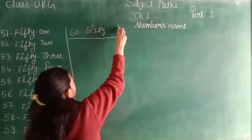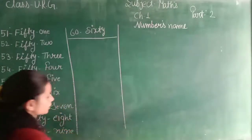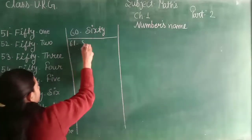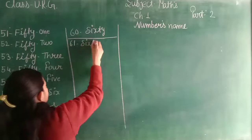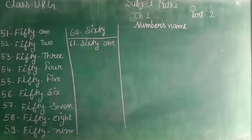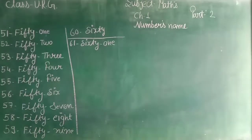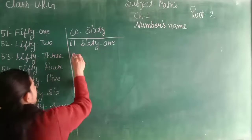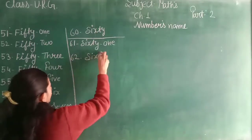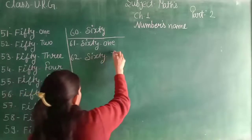Now we have to write 61, S-I-X-T-Y, 61, O-N-E, 1. This is 62, S-I-X-T-Y, 62, T-W-O, 2.